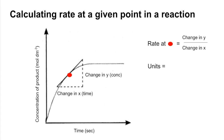The units would be moles per decimetre cubed on the top, because concentration is the y value, and we're dividing that by time — so seconds. Bringing that all together, we've got the units: moles per decimetre cubed per second.